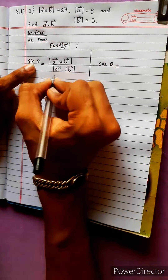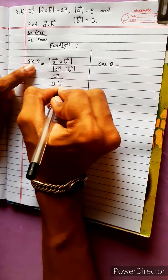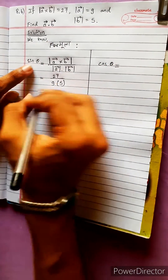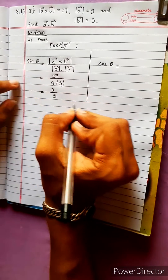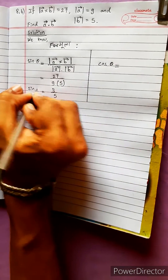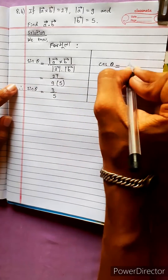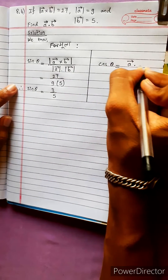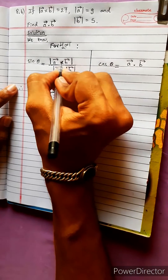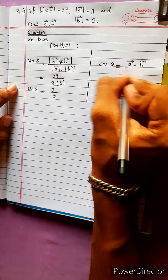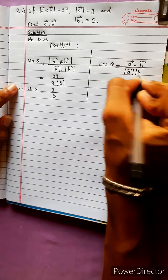This value is 27. This is a magnitude of 9 or 5. 9 into 3 gives 27. So 3 by 5 — this is the value. Sin theta also equals A vector dot product B vector.